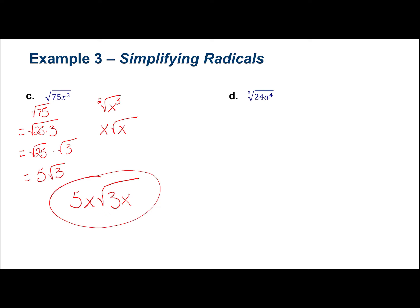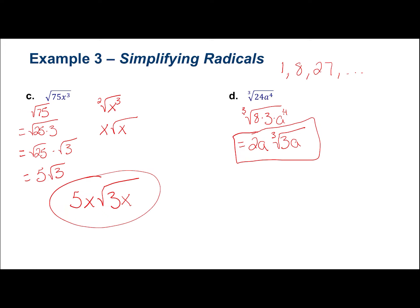For the cube root of 24 times a to the 4th, find a perfect cube that goes in. Perfect cubes: 1, 8 (2×2×2), 27 (3×3×3). Here, 8 goes into 24 three times, so 8 times 3. The cube root of 8 is 2; the cube root of 3 stays inside. For a to the 4th with index 3: 3 goes into 4 one time, so bring out one A with one remainder inside. Final answer: 2A times cube root of 3A.